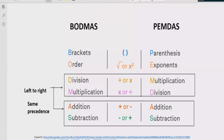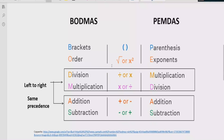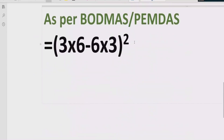You have to go left to right in your expression and find out which operation is coming first — either division or multiplication — and solve that part first. Similarly for addition and subtraction, we have the same rule: we solve addition first if it is coming first, and subtraction first if it is coming first. Now let's move forward to solve the given expression according to the BODMAS and PEMDAS rules.